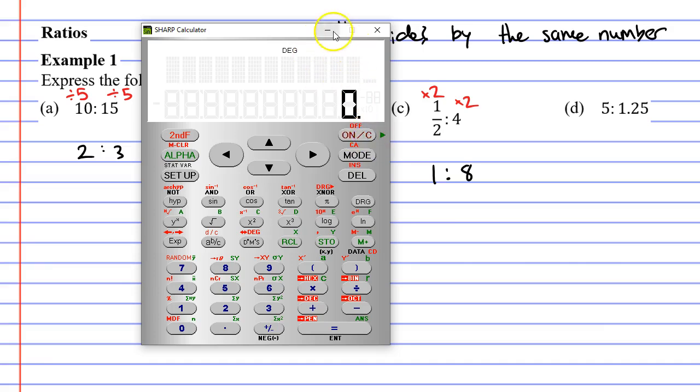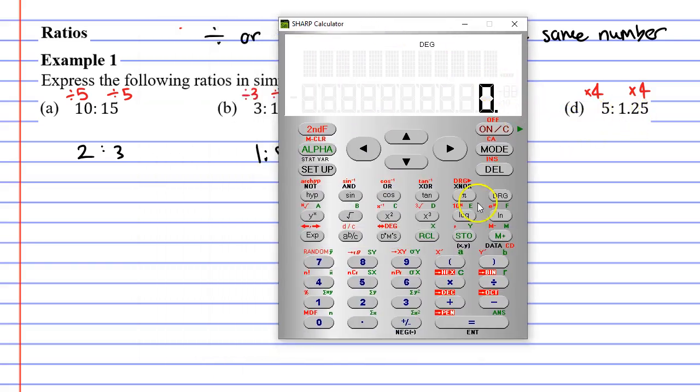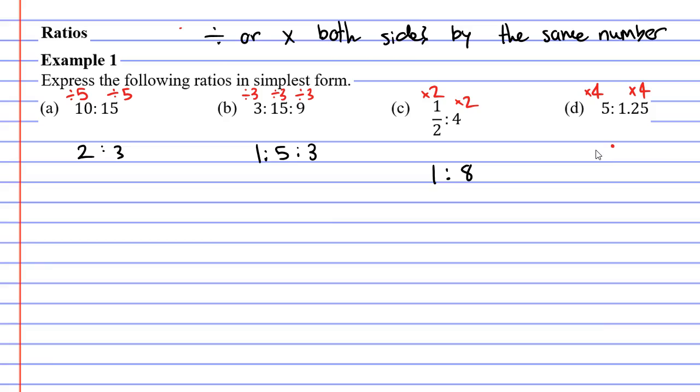Let's move on to question D now. You'll notice that we've got a decimal this time. So we're going to multiply by something, and sometimes it can be tricky to know what to multiply, so you're just going to have to keep trying until you find something. I can see that multiplying this by 4 is going to work really well. I'll show you this on the calculator. 1.25 times 4 gives me 5. So I can see that this is going to give me 5 on the right-hand side. The left-hand side isn't too hard. 5 times 4 is 20.